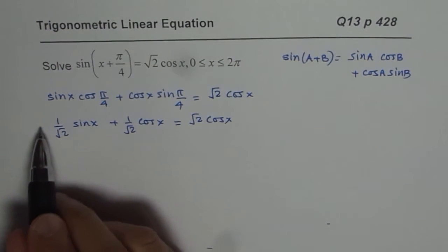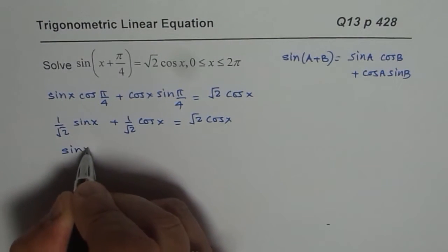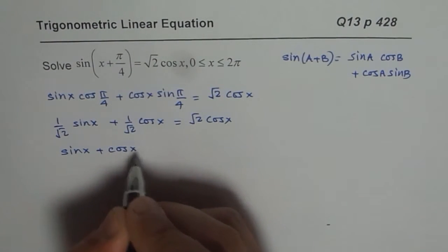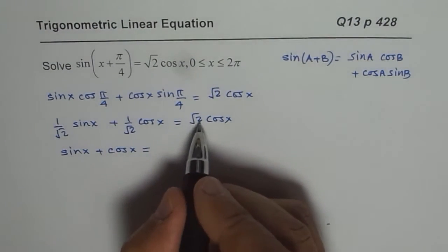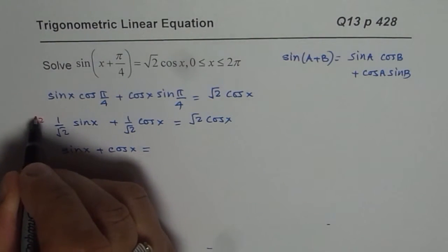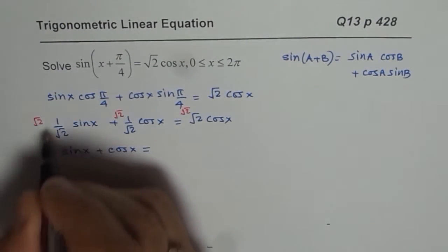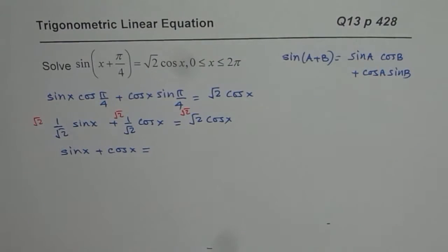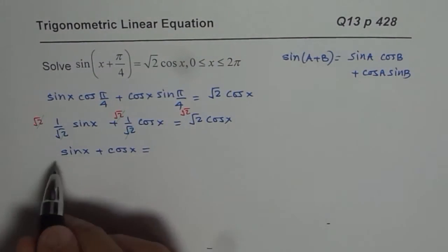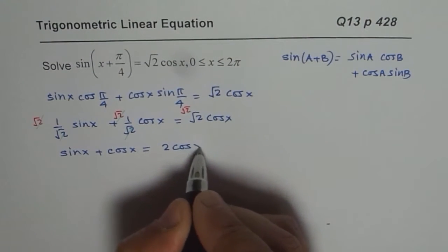Now we can multiply by √2 on both sides. Then we get sin x + cos x equals... when you multiply by √2, multiply each term by √2. The √2 terms cancel out, and on the right you get 2. So we get sin x + cos x = 2 cos x.